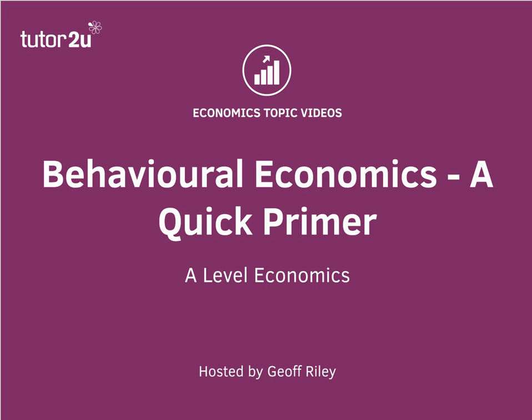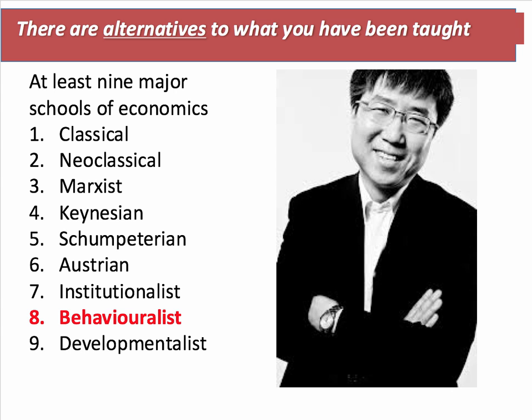Hi there and welcome to another quick primer on the essential ideas behind behavioural economics. As Ha-Joon Chang reminds us in his recent book about economics, there are many alternative schools of thought to the ones that necessarily dominate teaching in schools and universities. Ha-Joon argues there are at least nine major schools of economics, ranging from classical and neoclassical through to Keynesian, Austrian and behaviouralist economics. This primer looks at the rise of behavioural economics and in particular the extent to which the null model of agent behaviour was challenged in recent times.